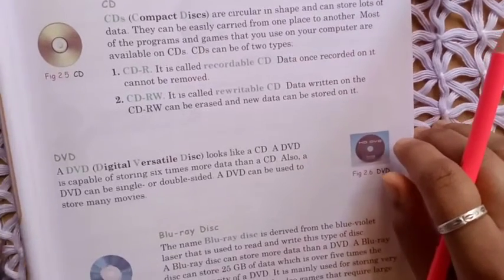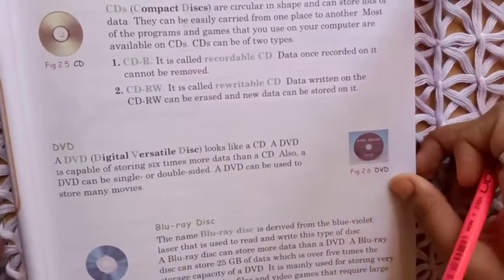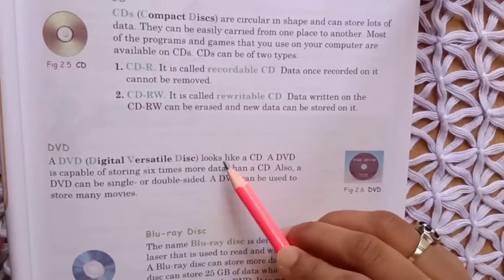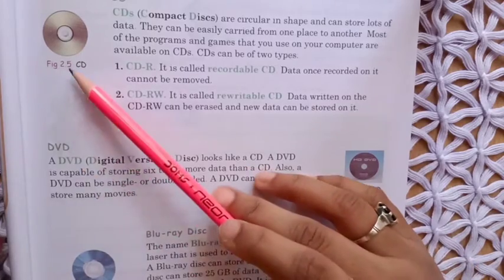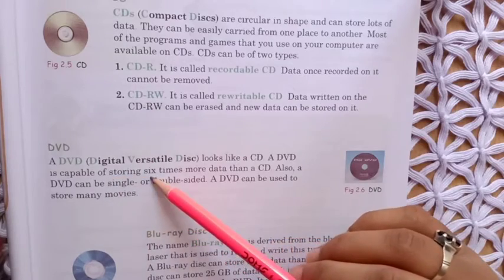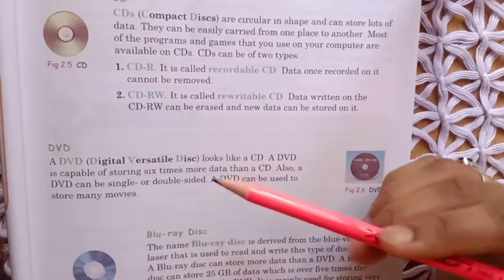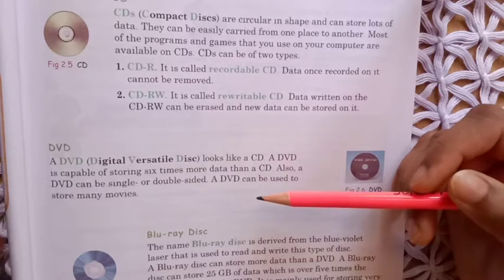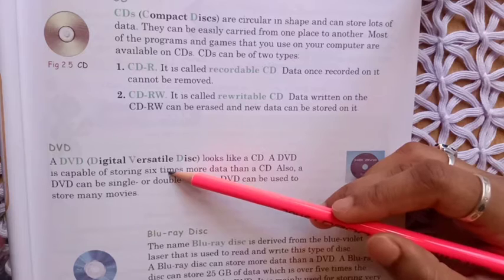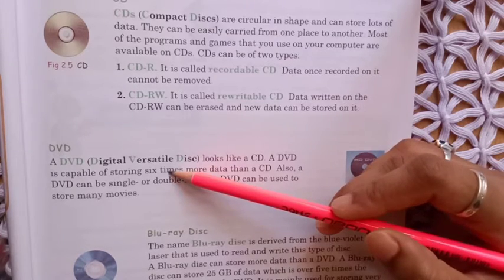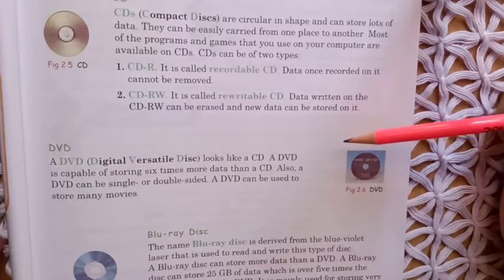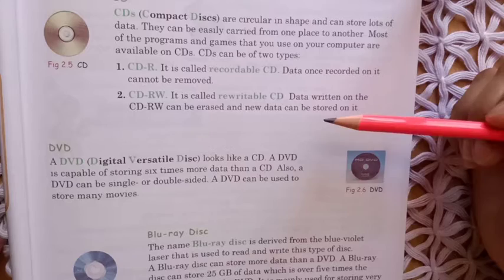Next is DVD — Digital Versatile Disk. A DVD looks like a CD. A DVD is capable of storing six times more data than a CD. That is the main difference between CD and DVD.